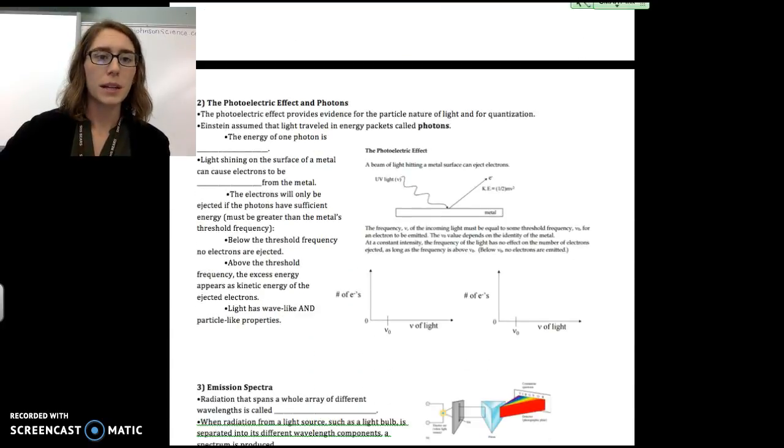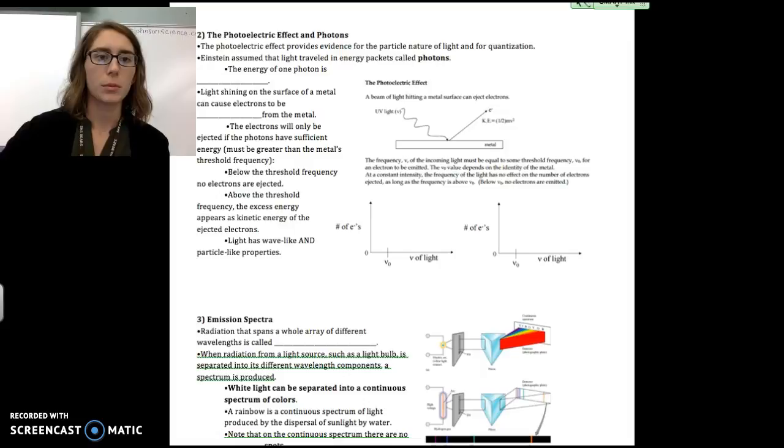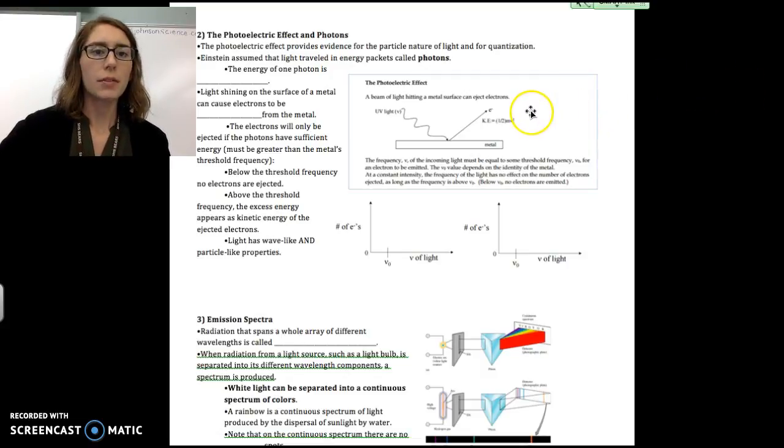So there is black body radiation. That was one of the first giveaways that energy is not always continuous. And the second is the photoelectric effect.